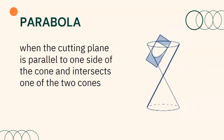On the other hand, a parabola is formed when the cutting plane is parallel to one side of the cone and intersects one of the two cones. The line here is one side of the cone. If the plane becomes parallel to this line and intersects only one cone, then the parabola is formed.